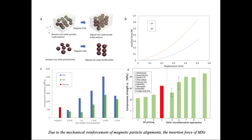Due to the mechanical reinforcement of magnetic particle alignments, the insertion force of microneedles reduced with the reduction of the apex angles. The mechanical reinforcement can be modulated by adjusting the concentration and the dimension of magnetic particles, and the magnetic field intensity. The compressive strength of the MF3DP printed AIO-based material is more than five times that of other 3DP printed microneedles.